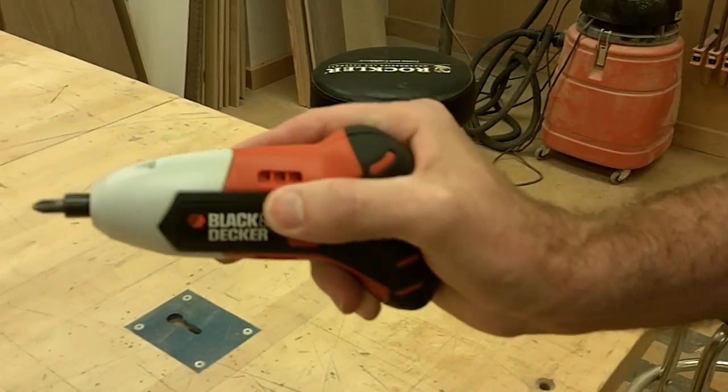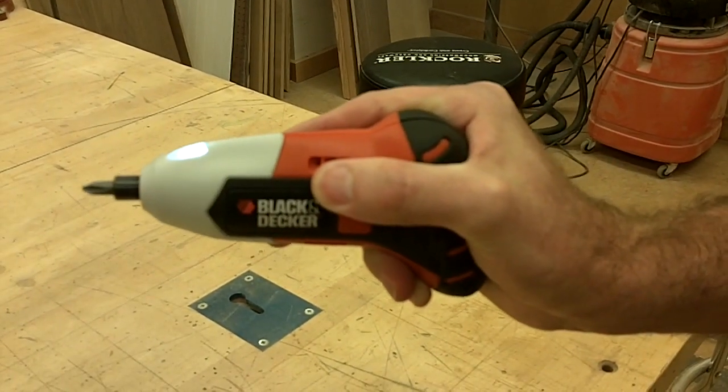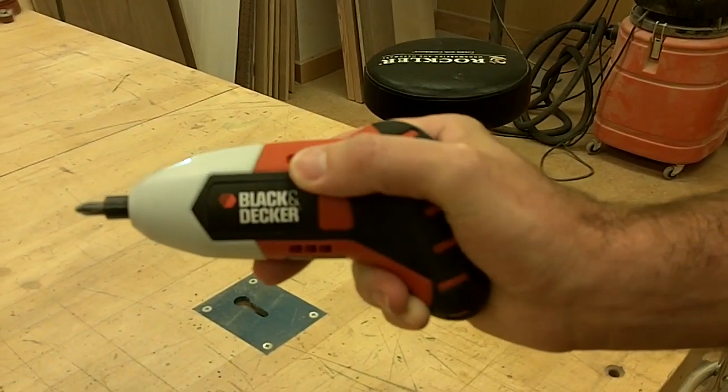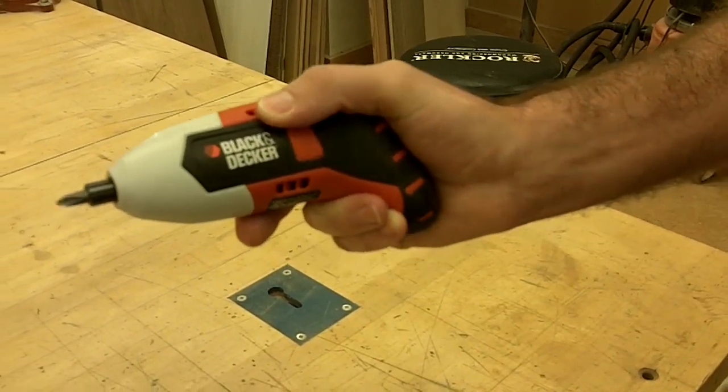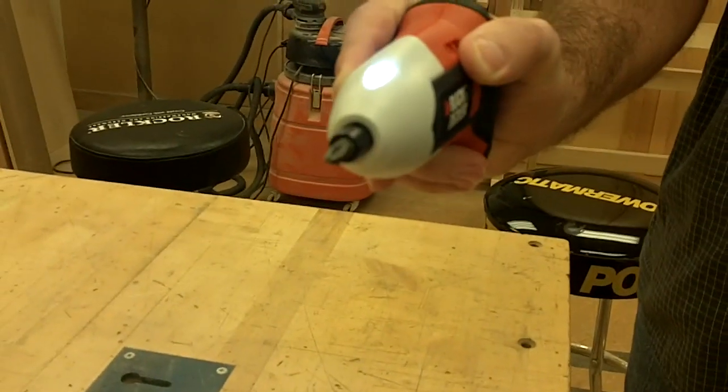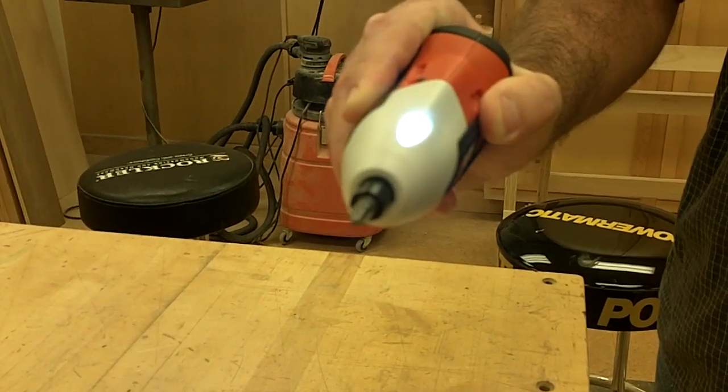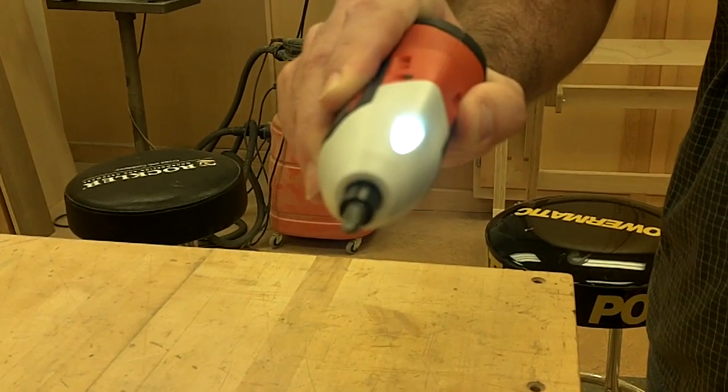And now when I squeeze that grip, you'll see nothing's going to happen until I turn the screwdriver in the direction I want the screw to turn. And so the tilt controls both the speed and the direction of the bit.